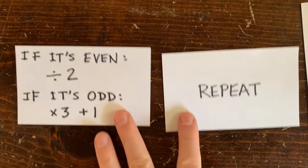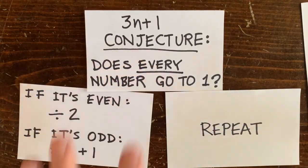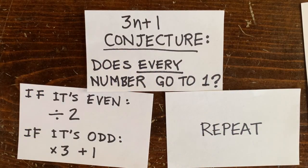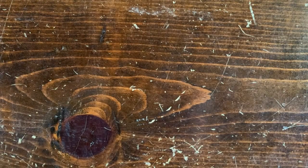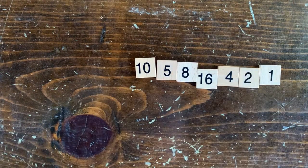The famous 3n plus 1 conjecture asks, does every number go to 1? Well, every number anyone's ever tried has gone to 1. For example, 10 goes to 1 and 17 goes to 1.